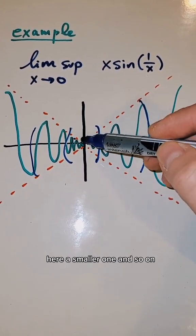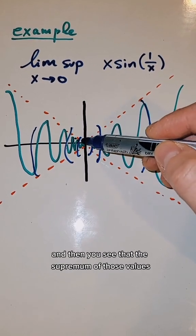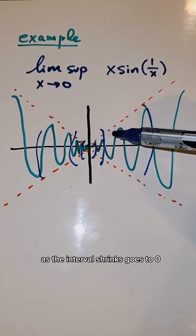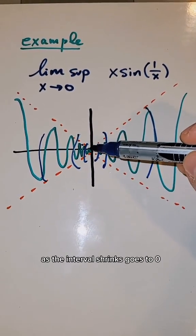And then the supremum might be here, here, a smaller one, and so on. And then you see that the supremum of those values, as the interval shrinks, goes to zero.